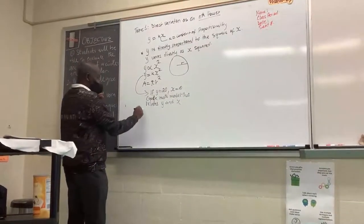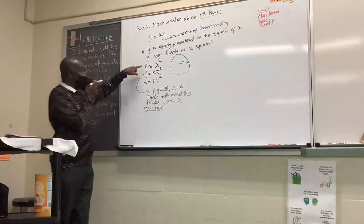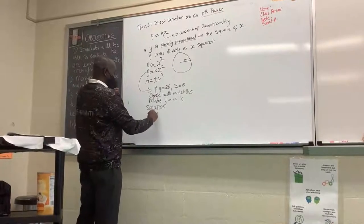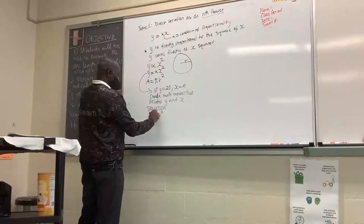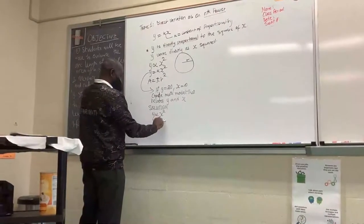Now, in that case, so here's our solution. We need to write our expression first, which is y is proportional to x squared, which is the same thing as saying y is equal to kx squared.